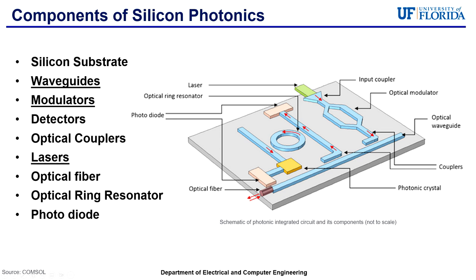Waveguides are a key component of silicon photonics, where they play a critical role in guiding light within the silicon substrate, and are usually made up of a material with a higher refractive index than the surrounding medium. Modulators are also a key component of silicon photonics, where they allow for the manipulation of light waves to change the properties of light. Optical ring resonators are actually used as a component in designing the modulator itself, where, with the incorporation of a material that can change its refractive index, it can be tuned to create a modulator.